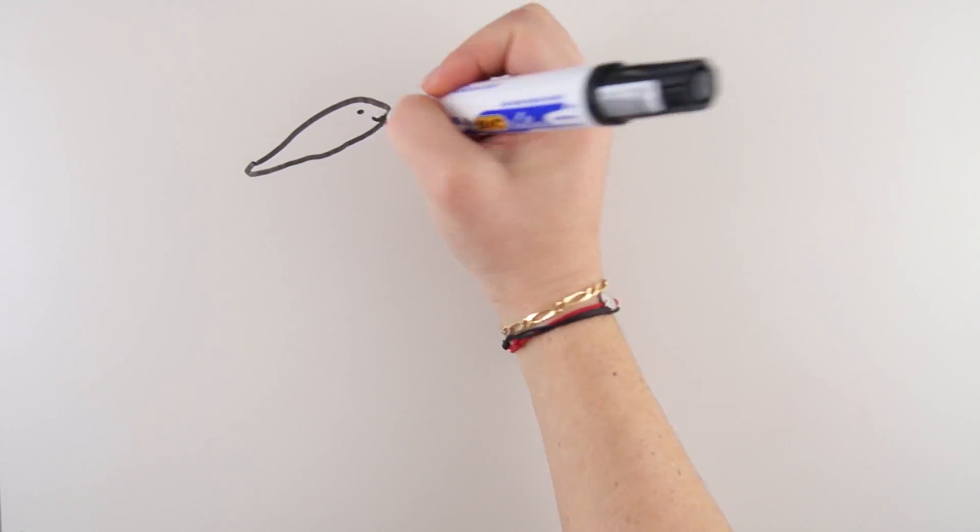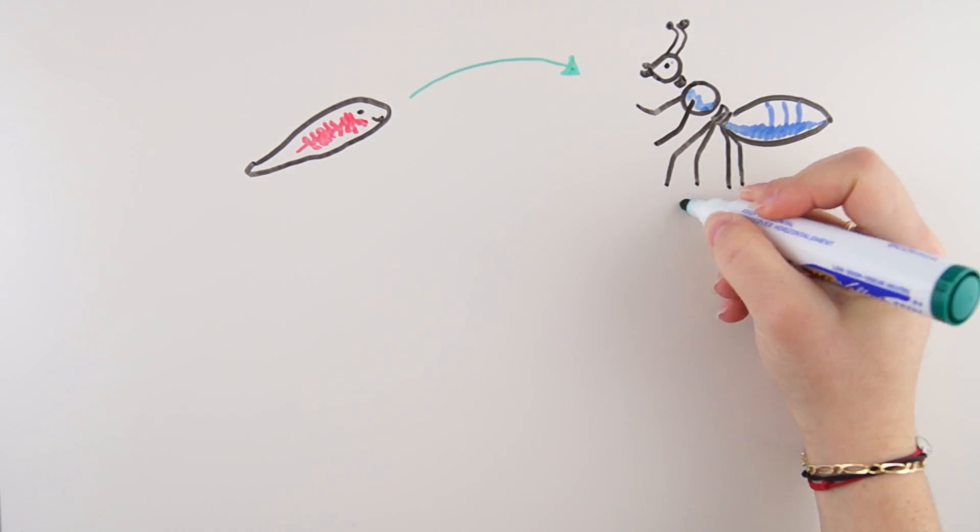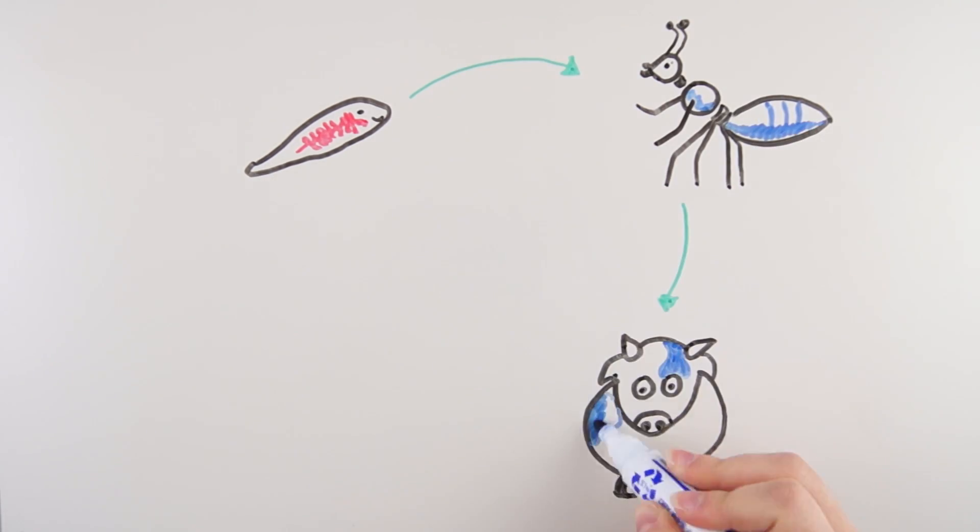Dicrocyllium dendriticum, also called the liver fluke, is a tiny parasite that uses ants to infect the only animals it can reproduce in, cows and sheep.